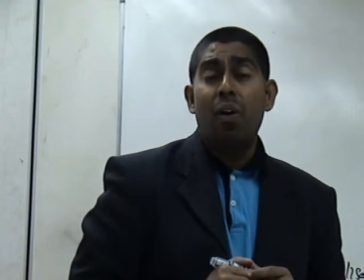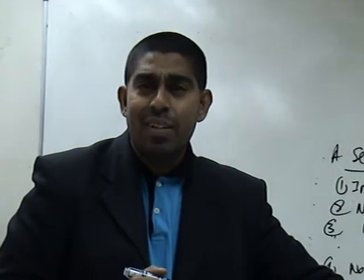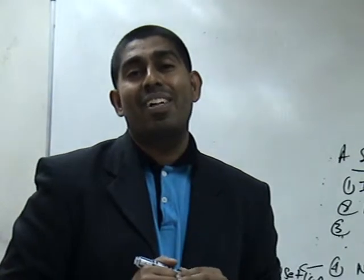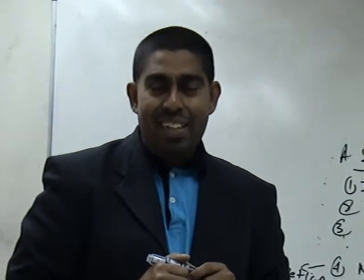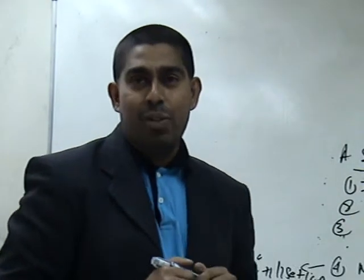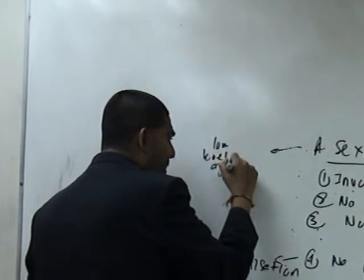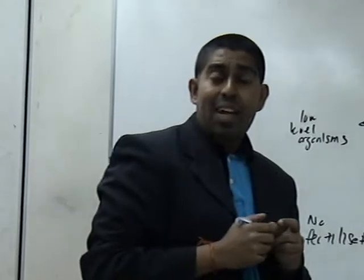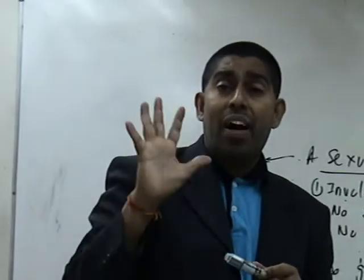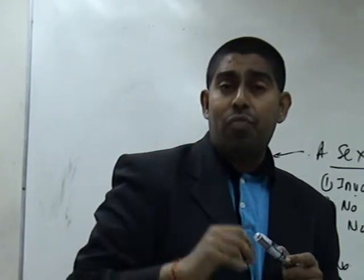Another very important point: asexual reproduction is the base for growth in simpler forms of organisms, or what we call unicellular organisms. Many unicellular organisms carry out asexual reproduction. In other words, asexual reproduction basically happens in low-level organisms. In your syllabus, you need to know five types of asexual reproduction.